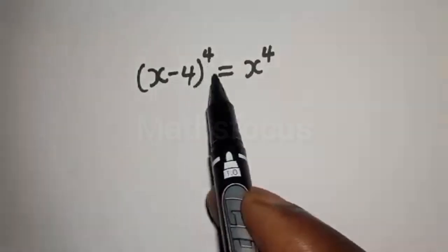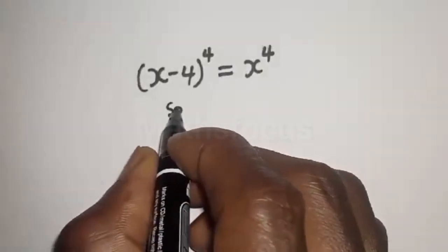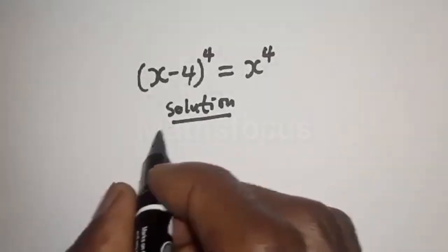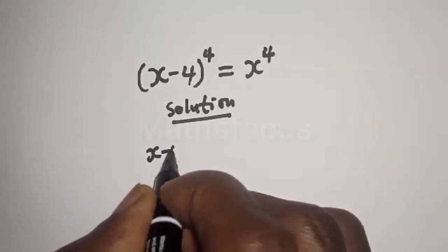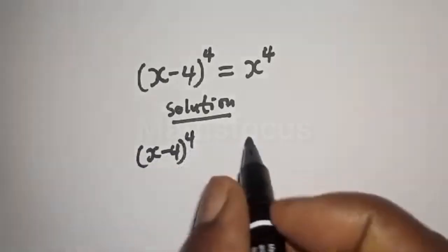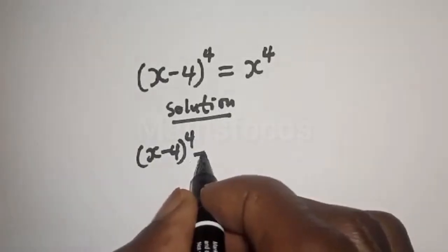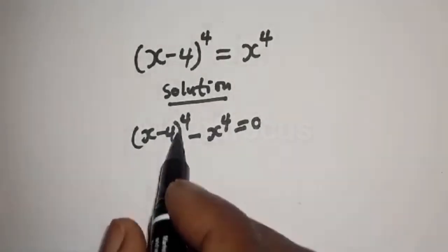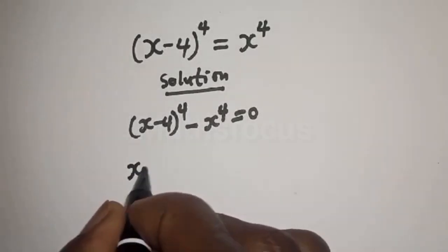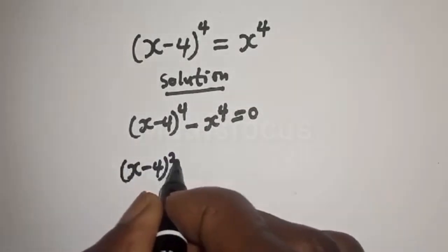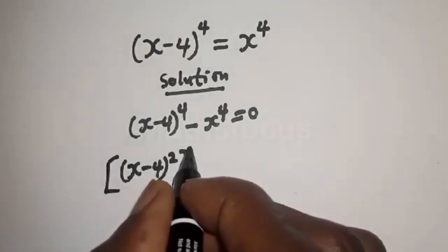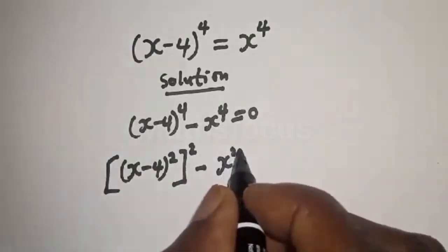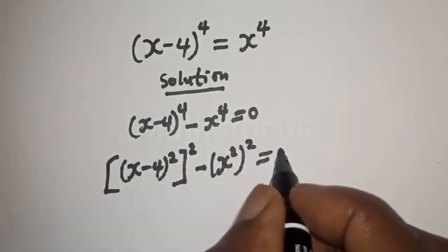We have x minus 4 raised to power 4 is equal to x raised to power 4. Let's bring the right side over, so x minus 4 raised to power 4 minus x raised to power 4 is equal to zero. Now x minus 4 raised to power 4 can be written as (x minus 4) squared, all raised to power 2, minus x raised to power 4 written as (x squared) squared, equals zero.